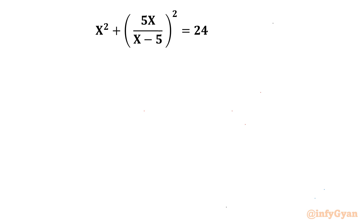Welcome back to Infigyan friends. In today's video we are having one very interesting question from Math Olympiad's algebra. The equation is (x² + 5x)/(x - 5) whole square equal to 24. We have to find out all possible solutions.